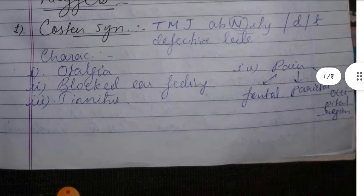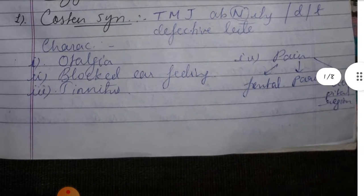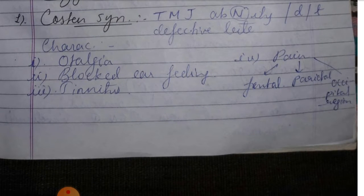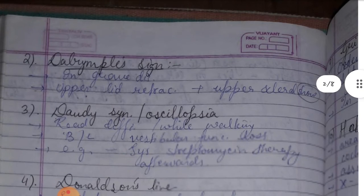Characteristics of Costen syndrome: first, otalgia (ear pain); second, blocked ear feeling; third, tinnitus sounds; fourth, pain in the frontal, parietal, or occipital region. So: otalgia, blocked ear feeling, tinnitus, and pain.